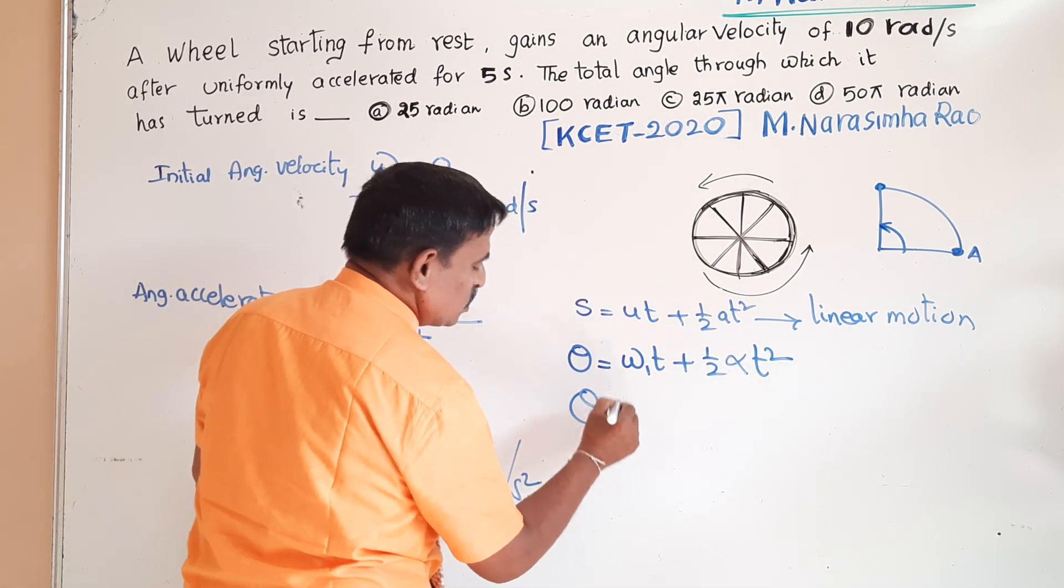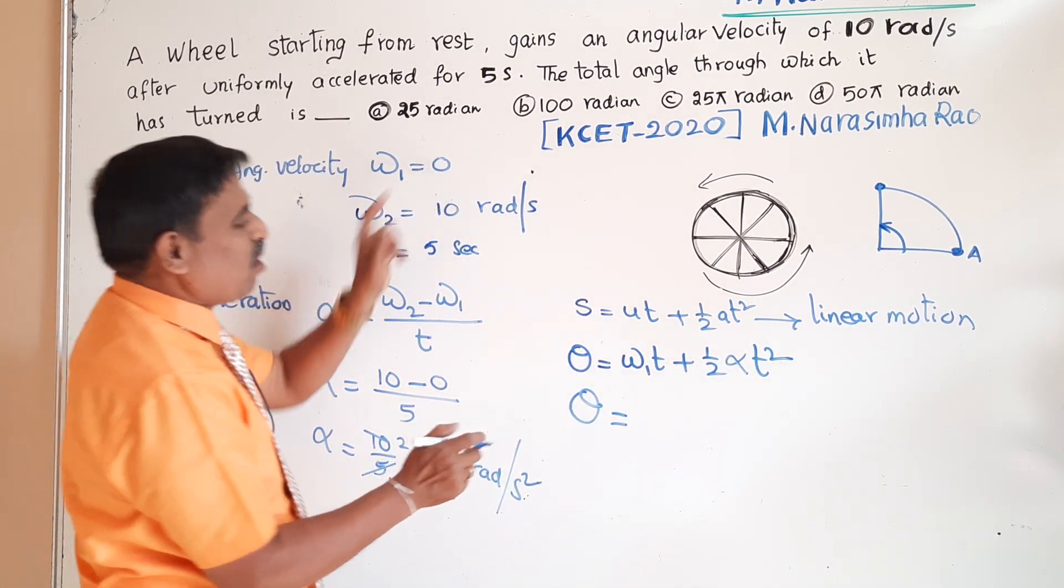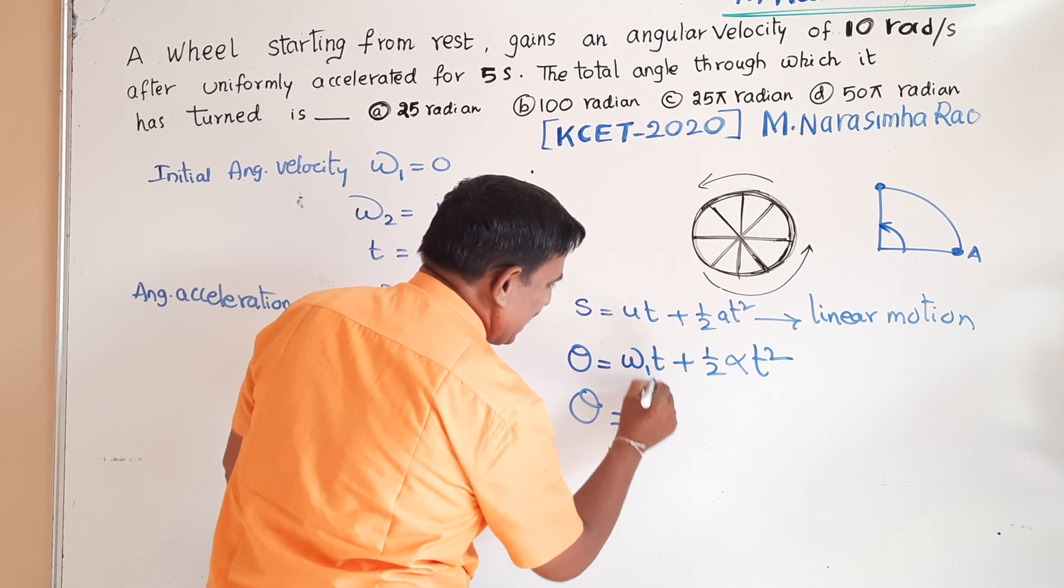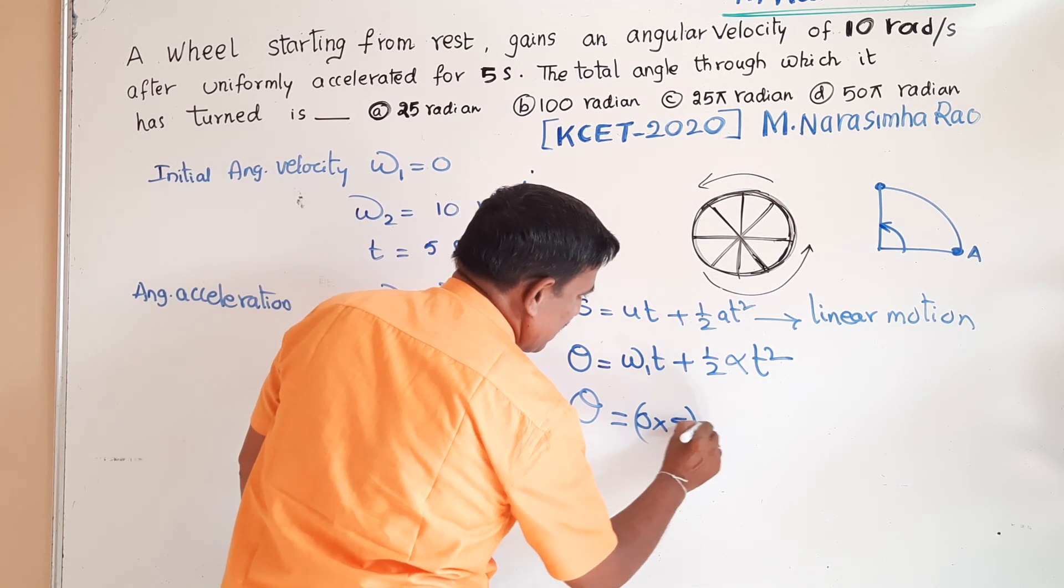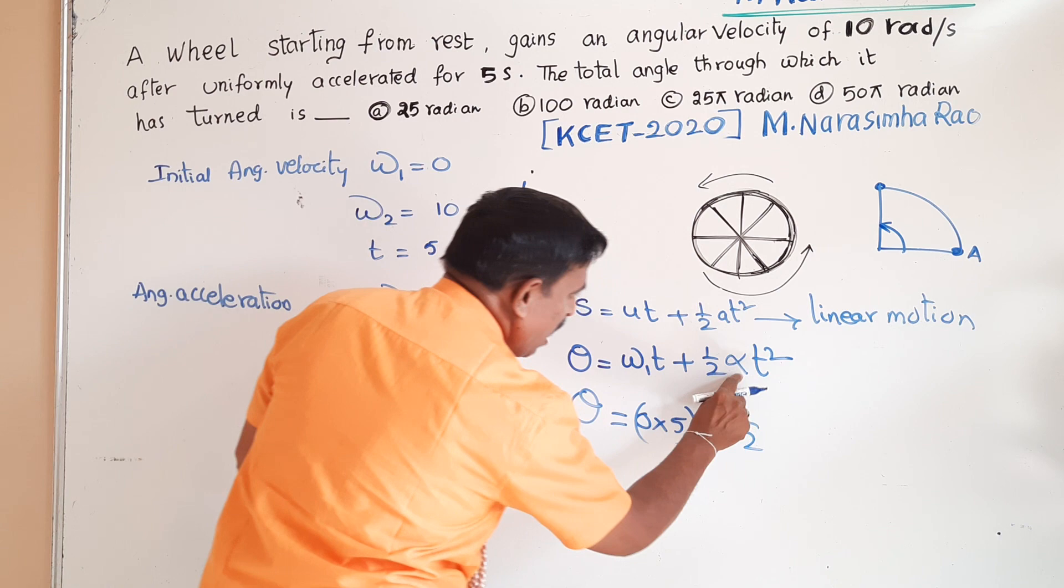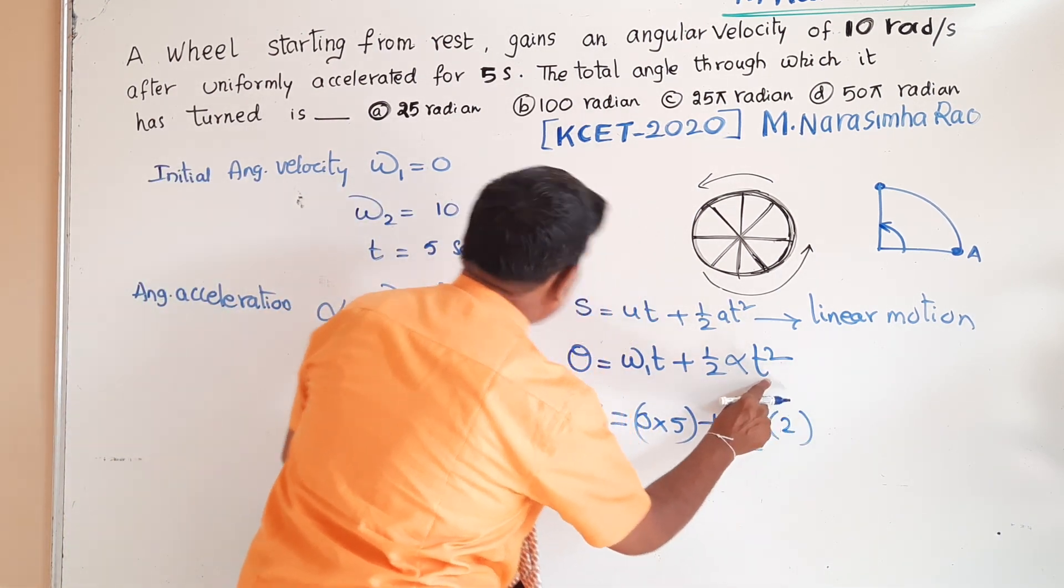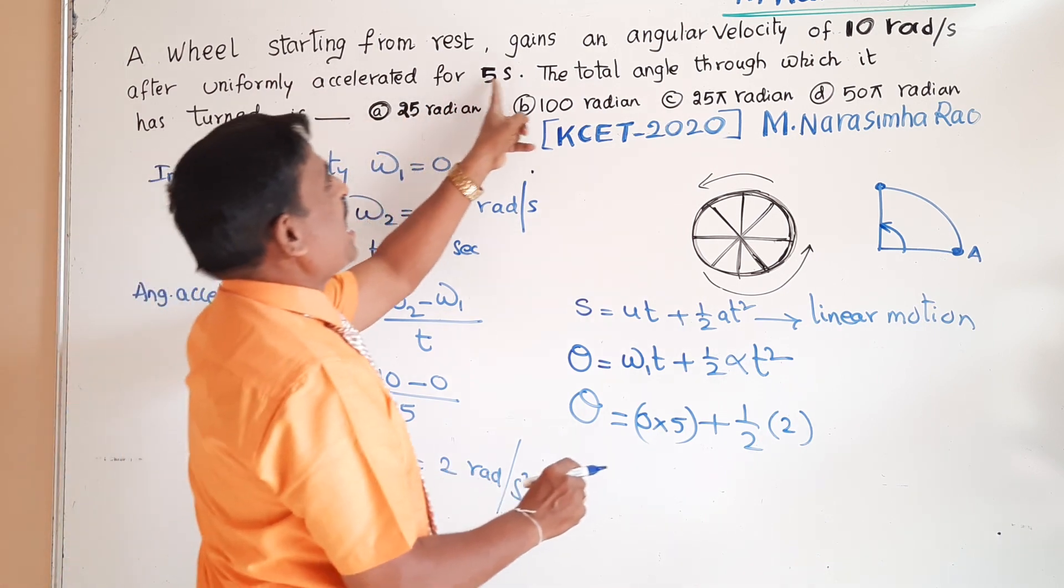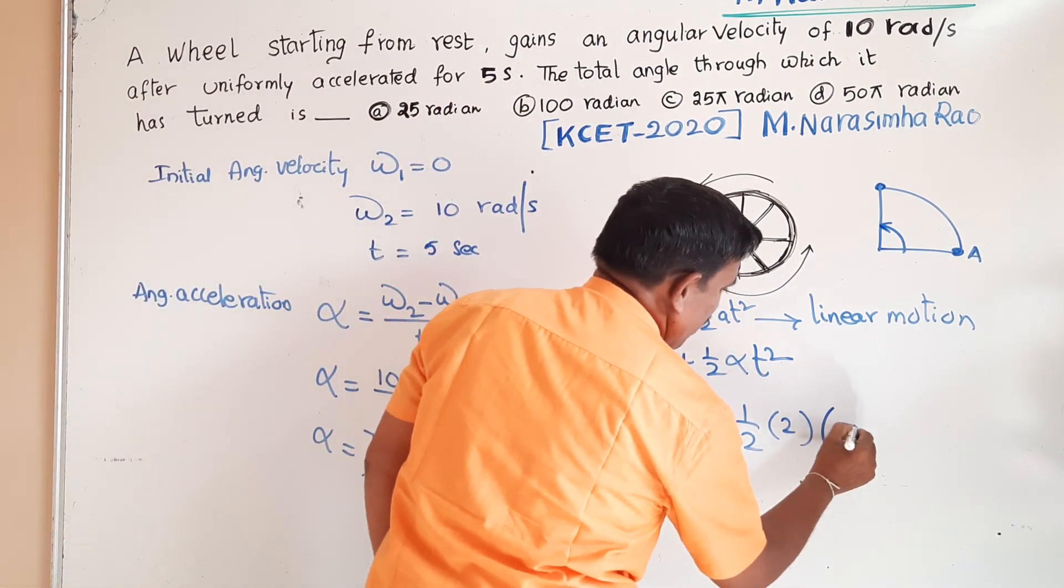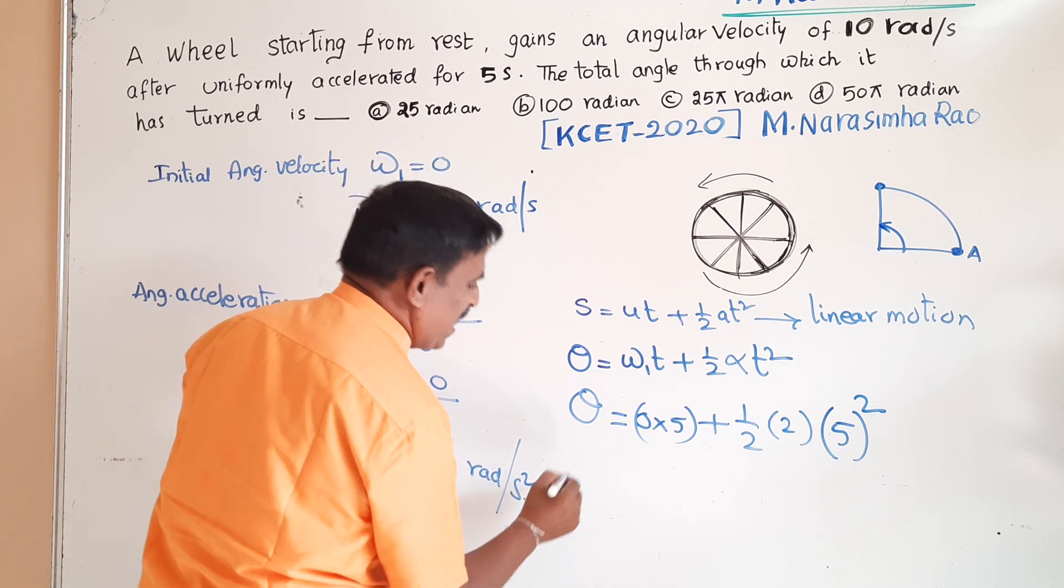Theta is equal to omega 1, which is 0, into t, 5 seconds, plus half alpha. Alpha is 2, t is 5 seconds, 5 seconds square.